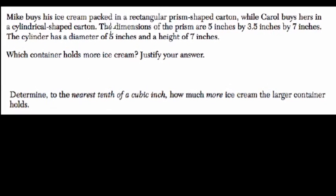Mike buys his ice cream packed in a rectangular prism-shaped carton, while Carol buys hers in a cylindrical-shaped carton. The dimensions of the prism are 5 by 3.5 by 7, and the cylinder has a diameter of 5 and a height of 7. Which container holds more, and how much larger is one than the other?